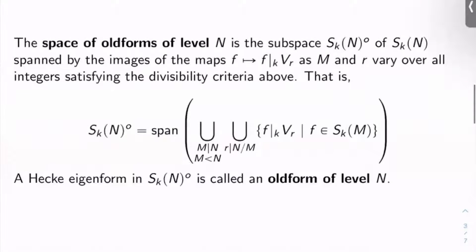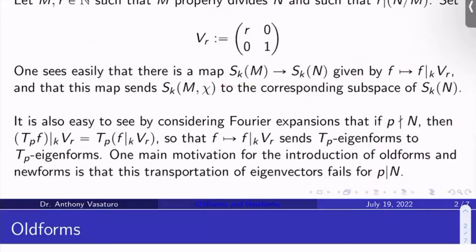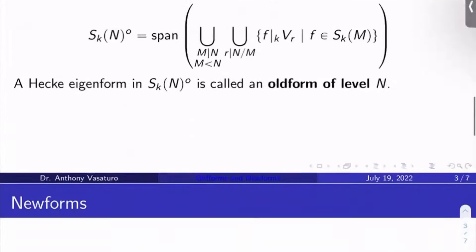And so let's define the space of old forms of level N to be the subspace, which we'll label S_K(N)^O, O for old, of S_K(N), spanned by the images of these maps that send f to f bar K V_r as M and r vary over all integers satisfying the divisibility criteria above. So M properly divides N and r divides the quotient N over M. They can be thought of as forms of level M where M divides N in some sense. They're old. They come from a different level.